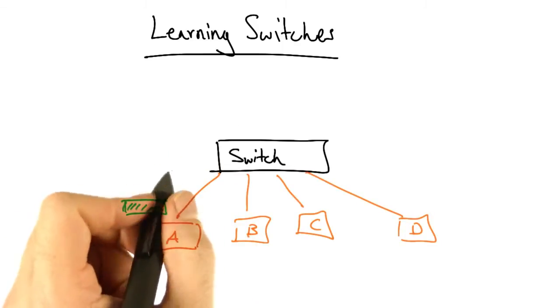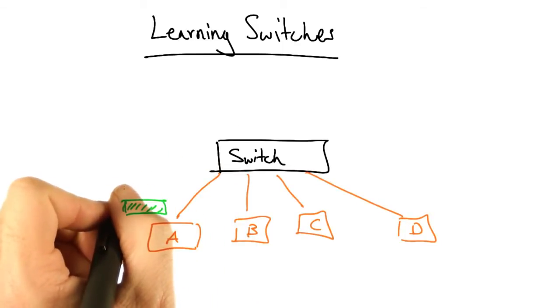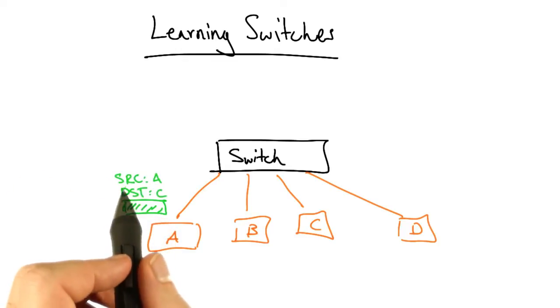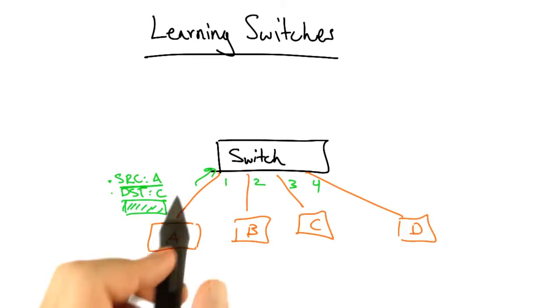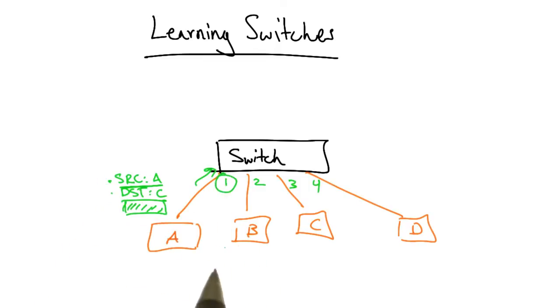Let's suppose that host A wants to send a frame to destination C. This frame has both a source MAC address and a destination MAC address. Initially, the switch has an empty forwarding table. But when it sees this packet arrive, it knows from the source MAC address that the host with MAC address A is connected to port 1.